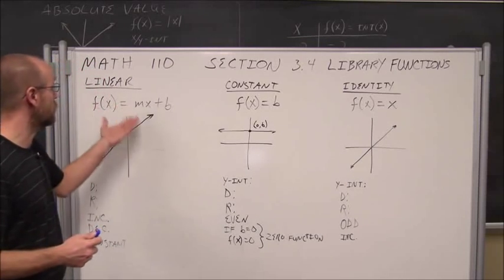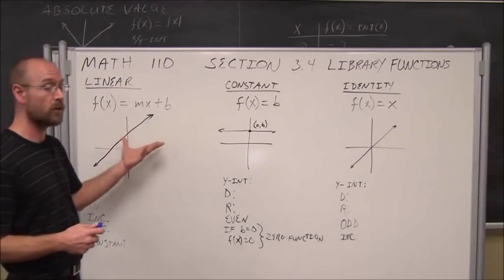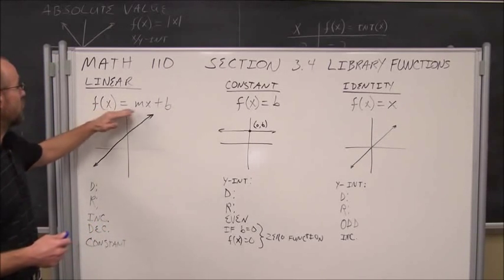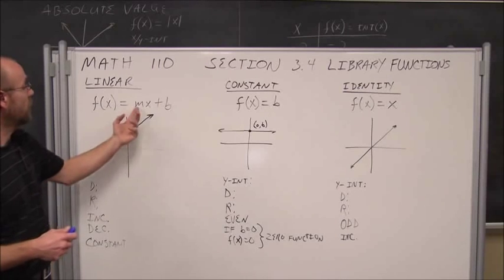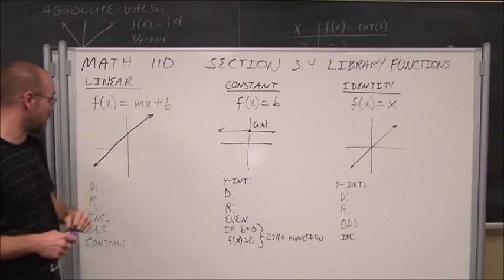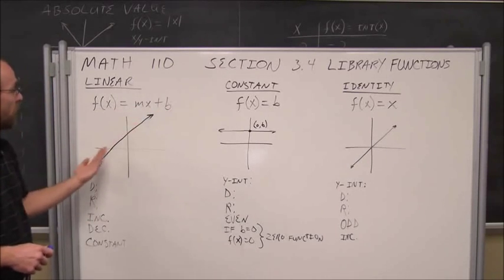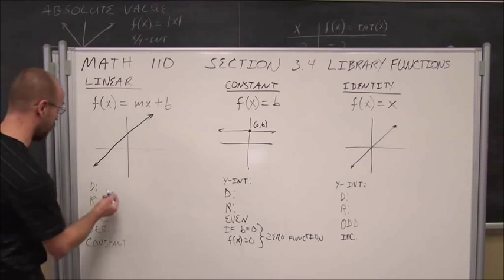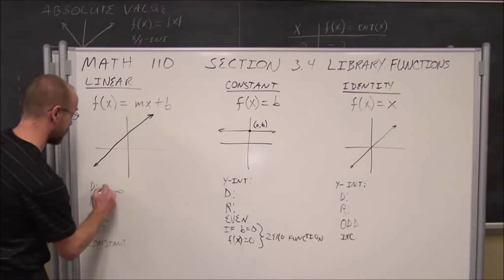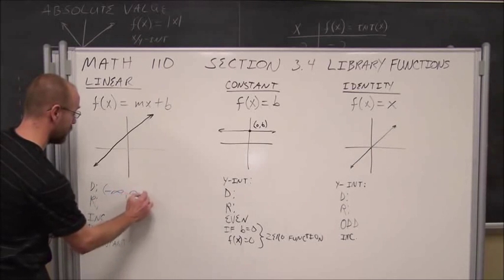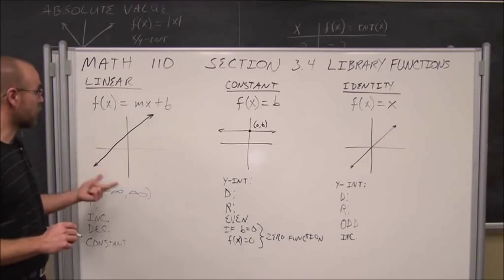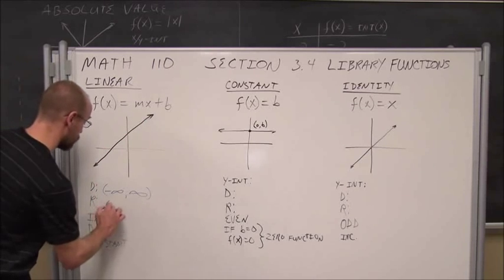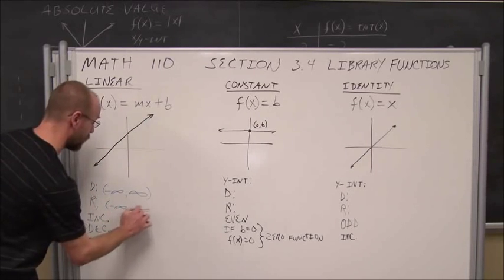The first thing we're going to look at is a linear function, something that we're very familiar with. In function notation, we have f of x equals mx plus b, where m is our slope and b is our y-intercept. The domain of a linear function is all real numbers — from negative infinity to infinity. The range goes down to negative infinity and up to positive infinity.